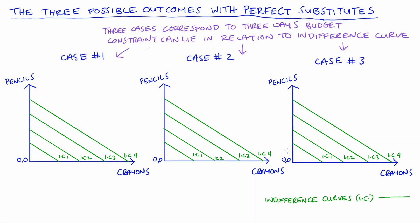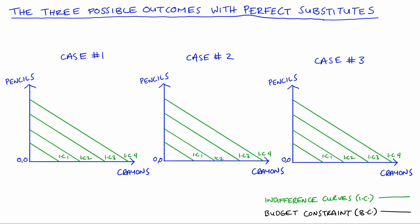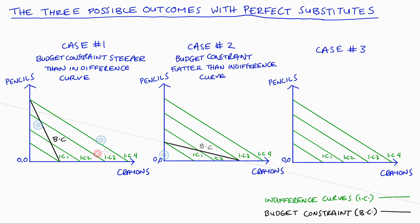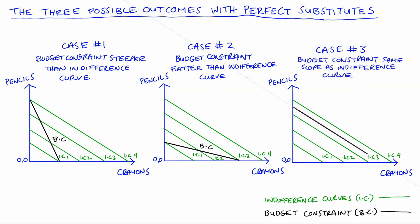The three cases correspond to the ways that our budget constraint can lie relative to our indifference curves. Our budget constraint will also be linear — a straight line — and I'll draw it in black. Case one is where our budget constraint is steeper than our indifference curves. Case two is where our budget constraint is flatter than our indifference curves. And case three is where our budget constraint has exactly the same slope as our indifference curves.